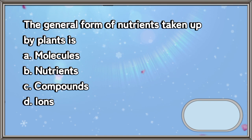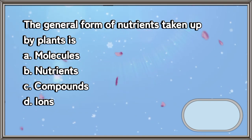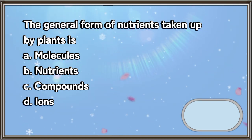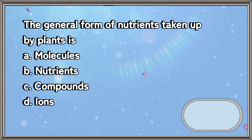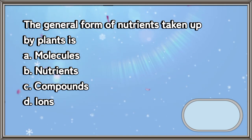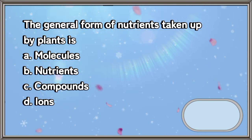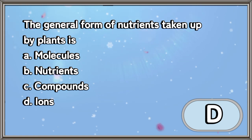The general form of nutrients taken up by plants is: A. Molecules. B. Nutrients. C. Compounds. D. Ions. The answer is letter D.